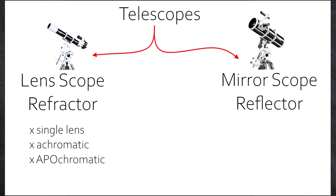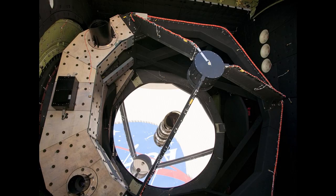The second big branch are the mirror scopes or reflectors. They use a totally different approach to gather light. They don't refract it, they, you will never guess it, reflect it.